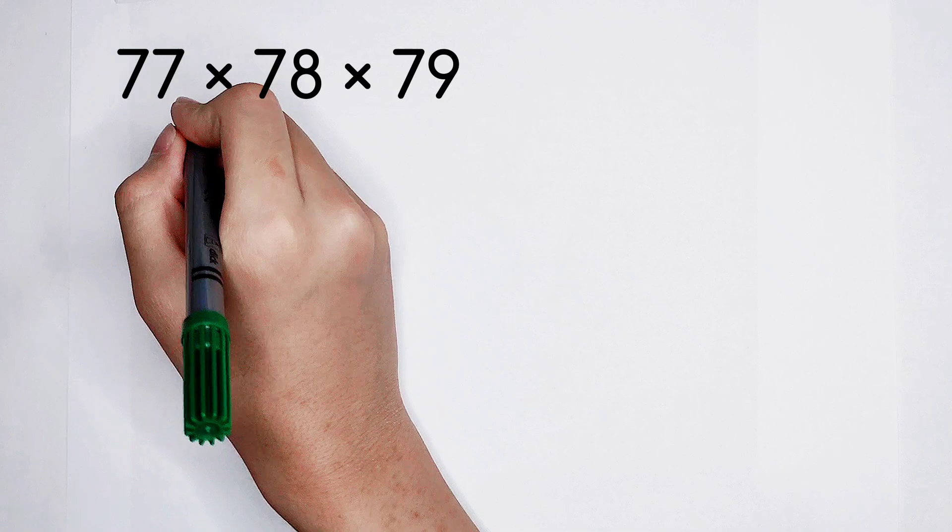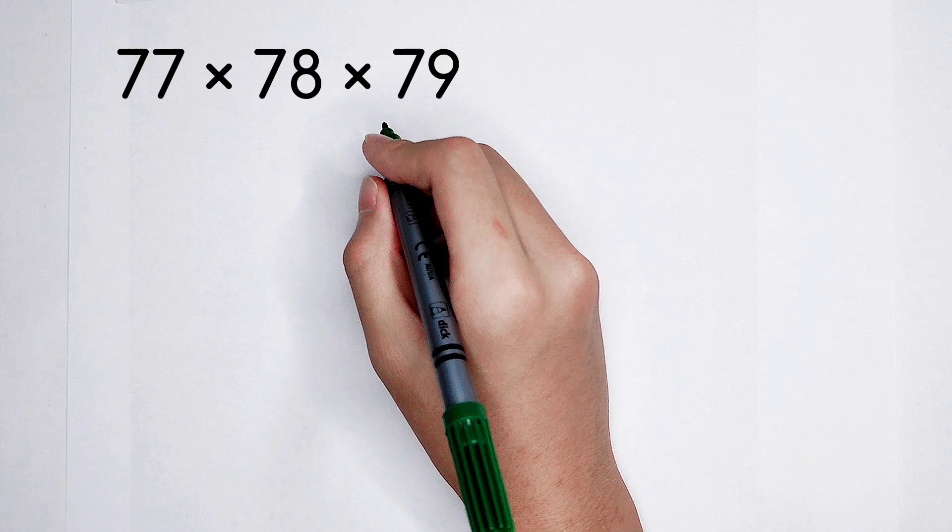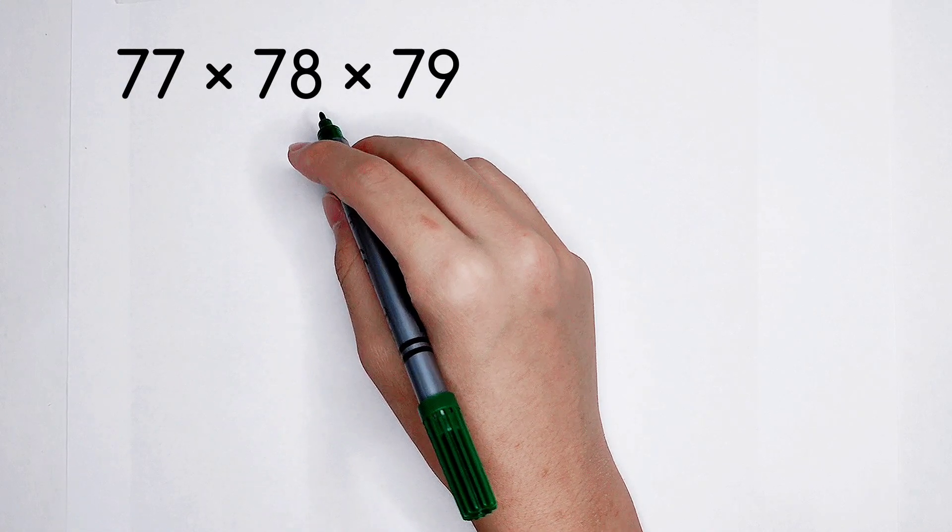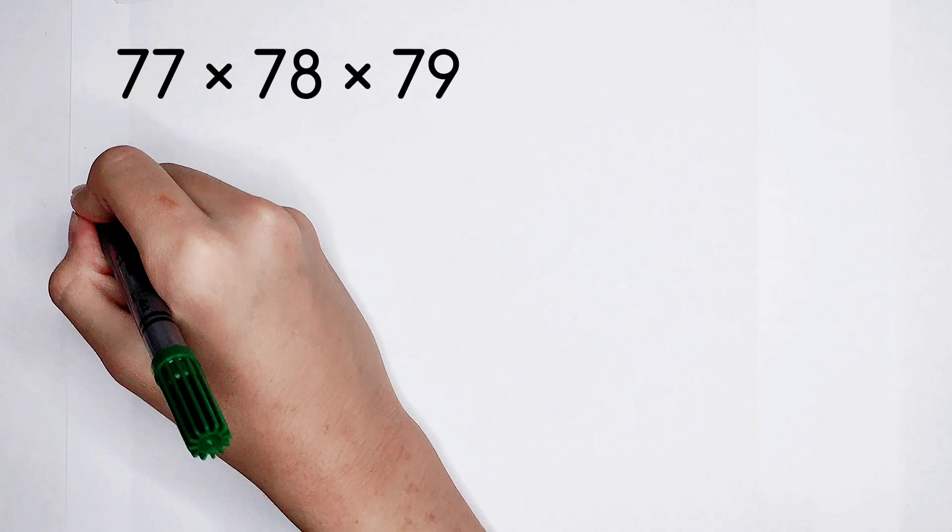77 times 78 times 79. I think our first reaction is this: 79 can be written as 80 minus 1. So do it.